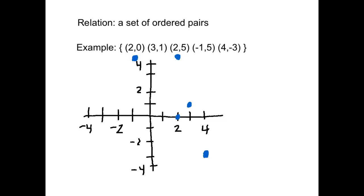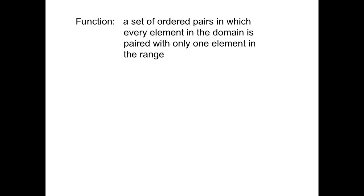You'll notice that they are not linear, so there's no linear relationship among these ordered pairs. But what we really like to look at in Algebra 2 are special types of relations called functions. A function is a set of ordered pairs — so it is a type of relation — but it's a special type of relation in which every element in the domain, or x-values, is paired with only one element in the range.